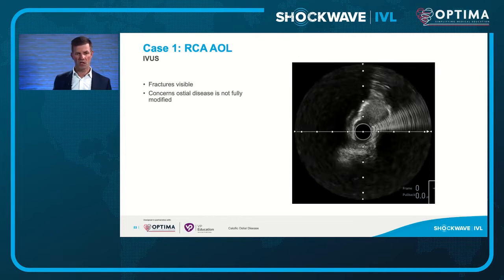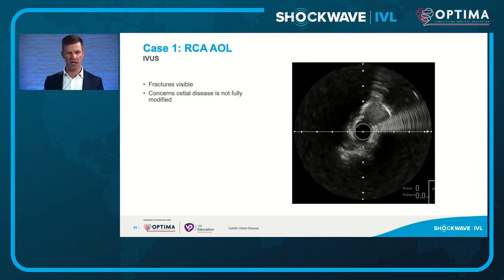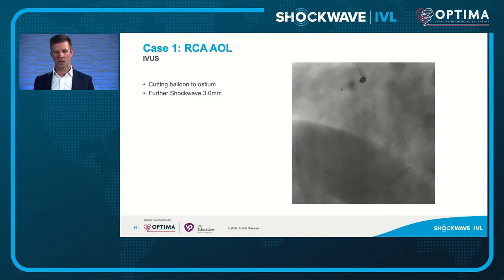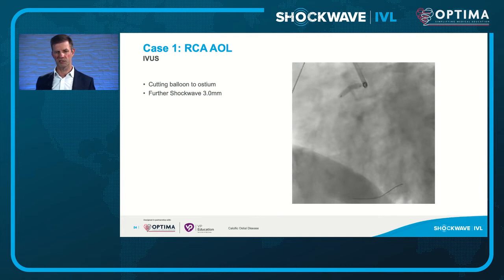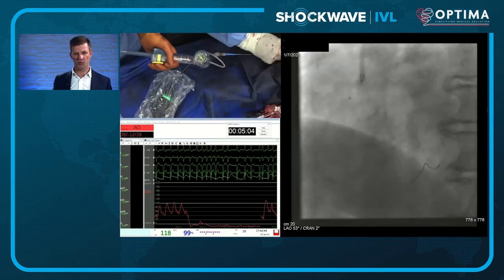On re-imaging, there are visible fractures, but I'm still concerned that I haven't disrupted the ostium enough or modified the osteal disease sufficiently. I use a 3 by 15 Wolverine cutting balloon, and with inflation there's a suspicion of a more proximal waist. Shifting to a spider view and then an LAO caudal position, it's more obvious there is a waist. I then use a 3 millimeter shockwave balloon deployed at the ostium, delivering around 40 pulses.